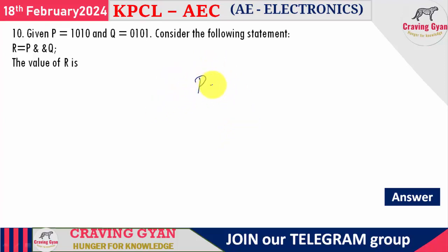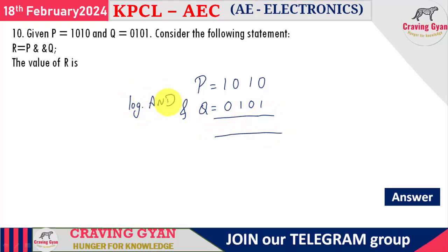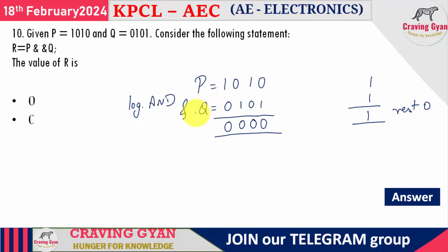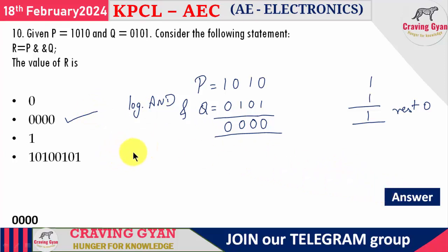Tenth question: the value of P is 1010 and you need to perform a logical AND operation with Q = 0101. Remember: 0 AND anything is 0, and 1 AND 1 is 1. P is 4 bits wide and Q is 4 bits wide, so R should also be 4 bits wide. The result R = 0000, so option 2 is correct.